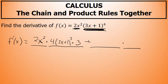The second term from the product rule is the second factor unchanged — the 3x plus 1 to the fourth power unchanged — times the derivative of the first factor, which is the derivative of 2x squared, which is 4x.